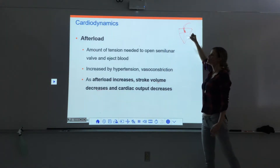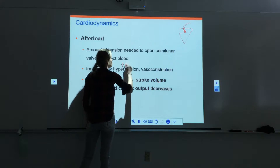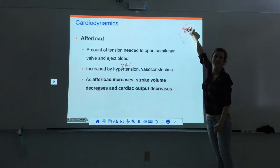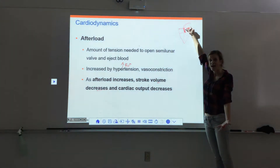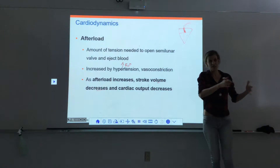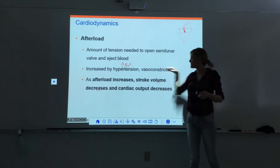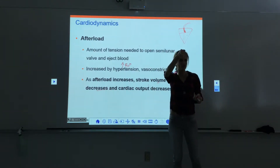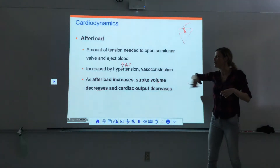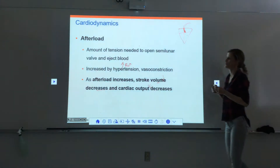What could increase afterload? Hypertension — high blood pressure — increases the pressure in the vessels, making it hard to push against that and open the valves. Vasoconstriction goes right in line with that: when the diameter of the vessel gets smaller, there is more pressure and it's harder to push against it. Either of those things will increase afterload, decreasing stroke volume and therefore cardiac output.